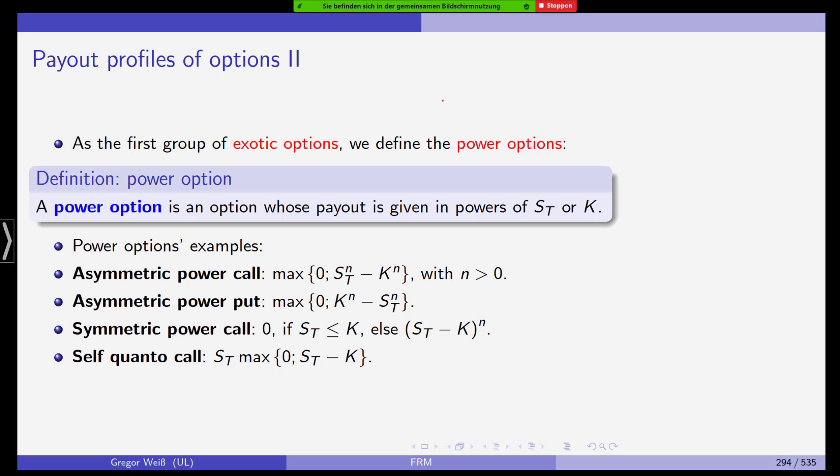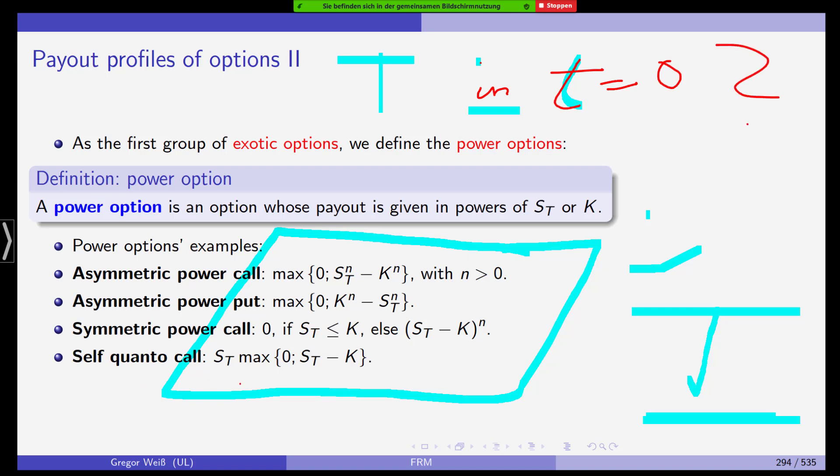You might ask yourself, if the payout profile is so much higher for a self-quanto call than for a regular call, why should I buy a call? Well, these are only, and let's make this very clear, all these payouts here, they are in capital T. It's only in capital T. The question is, what is the price in T equal to 0? And a self-quanto call will be much more expensive than a regular plain vanilla call. So that's why you can define any type of payout profile. This will only make the option more expensive or cheaper for the investor. It depends on the payout profile.